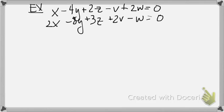Let's look at an example of a system of linear equations. x minus 4y plus 2z minus v plus 2w is equal to zero, and 2x minus 8y plus 3z plus 2v minus w is equal to zero.